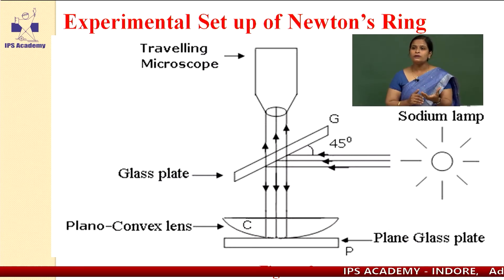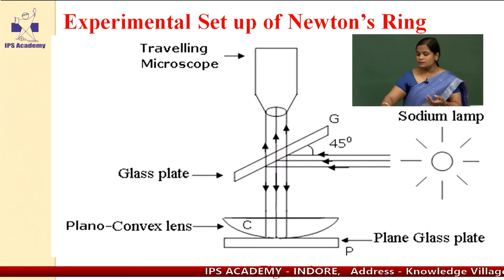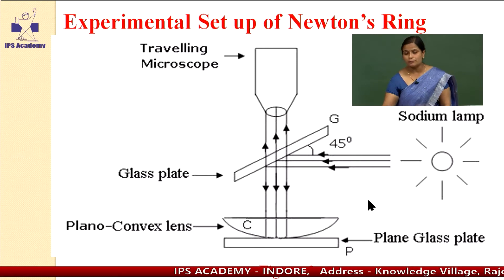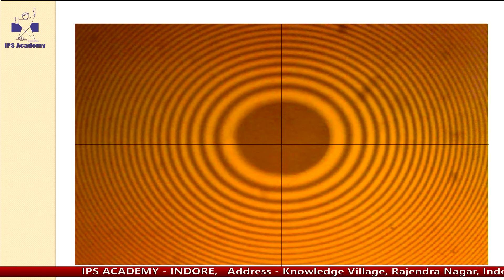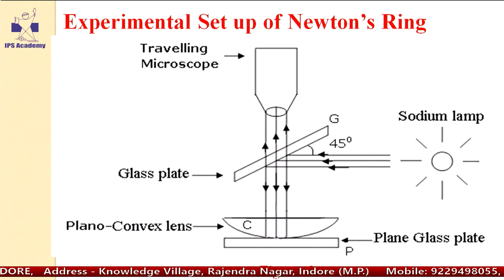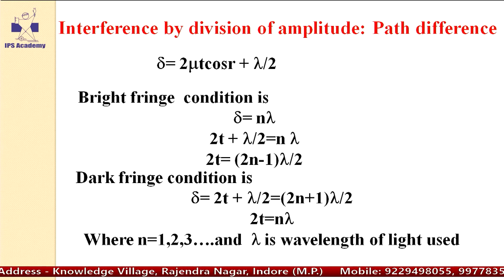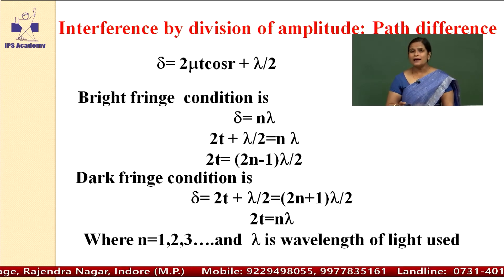Where are the rings formed? Rings are formed in the region of the air film, and we observe rings which are circular in shape. The centre is always dark because at the point of contact, the value of T is 0. In the equation, delta equals 2 mu T cos R plus lambda by 2. When R equals 0, the equation becomes 2 mu T plus lambda by 2. Since the refractive index of air is 1, it becomes 2T plus lambda by 2.